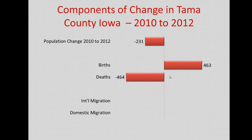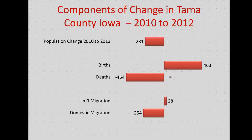The next category is international migration: Tama County realized 28 international in-migrants. In contrast, domestic migration counted 254 persons who moved from Tama County to some other county in the United States. If we sum the net natural change and the net migration change, we arrive at the total population change.